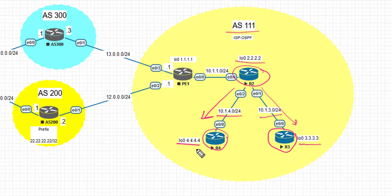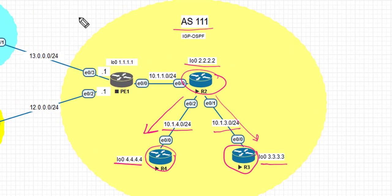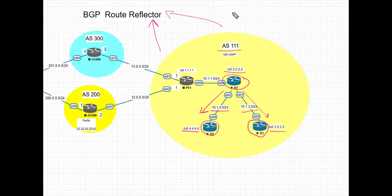The underlying topology and IGP is already configured as OSPF. Why the need for route reflectors? Because of the IBGP split horizon rule, which says that when a BGP speaker receives an update from an IBGP speaker, it will not advertise that update to another IBGP speaker.